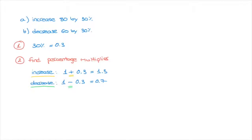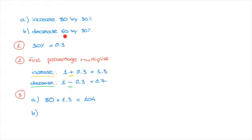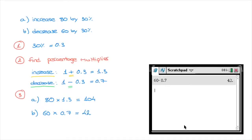Now that we have the percentage multiplier, we move on to the third and final step, in which we multiply the number we're increasing or decreasing by the percentage multiplier. For question A, we were increasing 80 by 30% — the multiplier was 1.3 — so that's 80 times 1.3, which equals 104. For question B, we were decreasing 60 by 30% — the multiplier was 0.7 — so 60 times 0.7 equals 42.